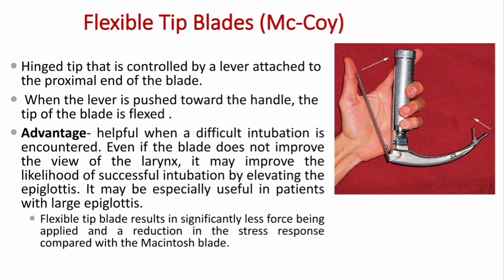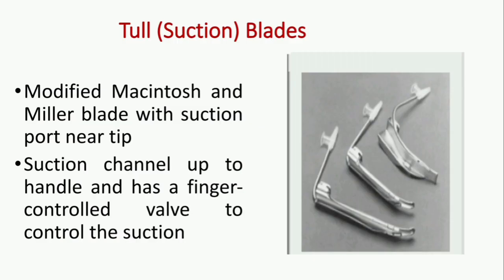There is yet another type of blade, also known as the Thull or suction blade. These are modified McIntosh and Miller blades with a suction port near their tip. The suction channel is connected up to the handle and has a finger control valve to control the suction.